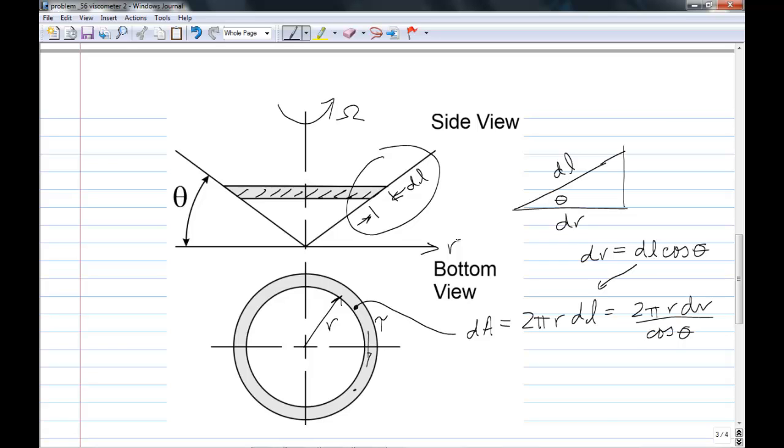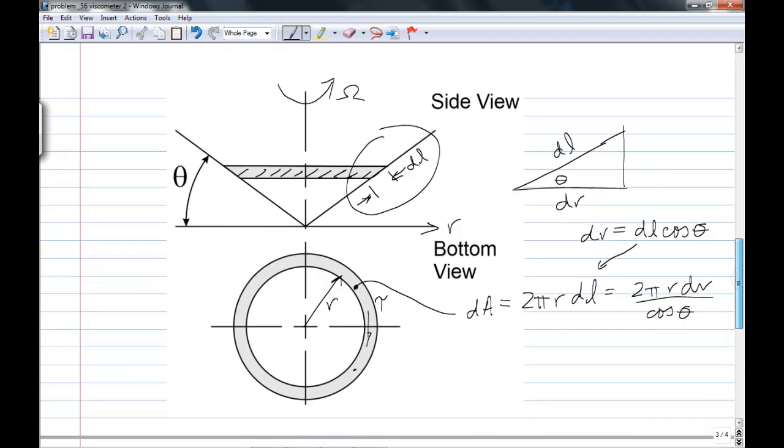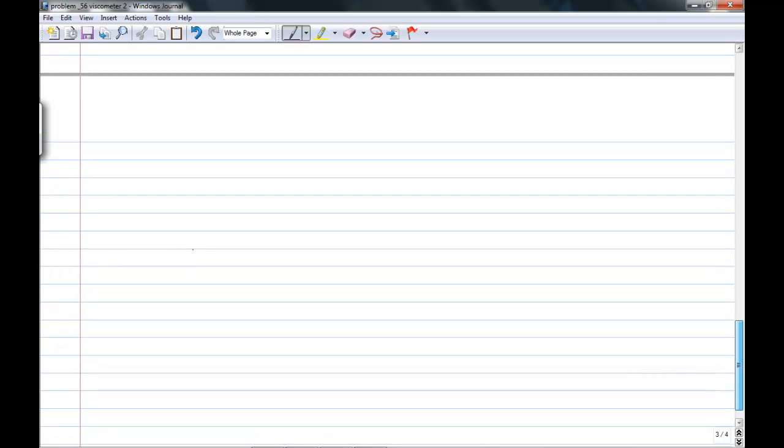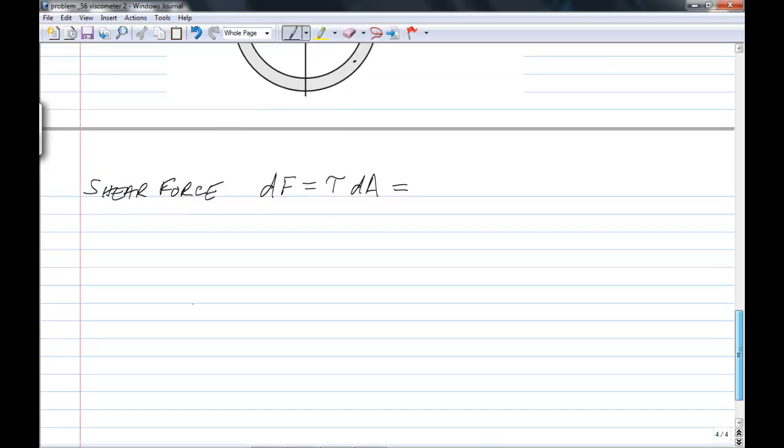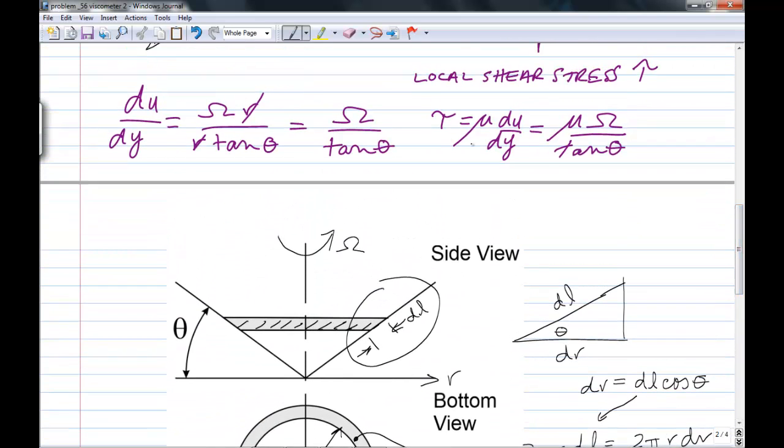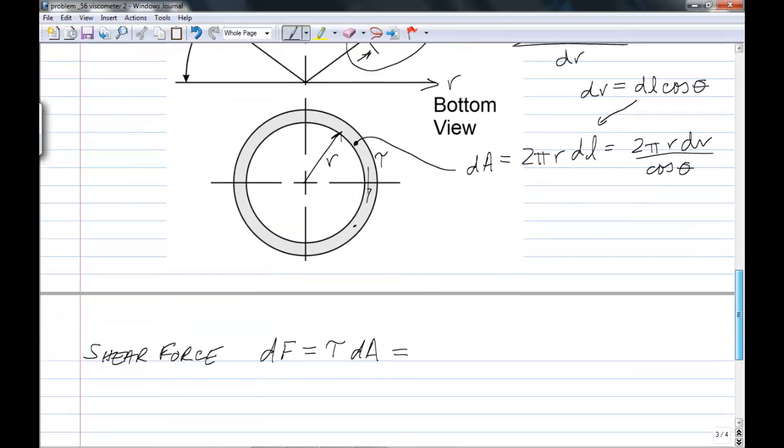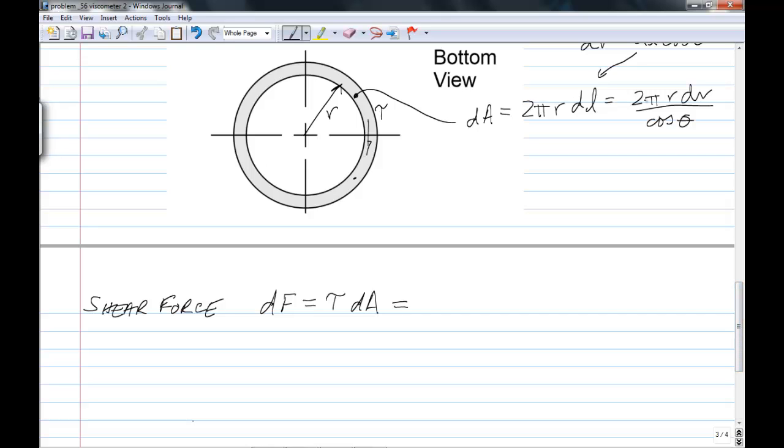Now we have the area and we have the shear stress on that little incremental area. We can multiply them together. Shear stress times area gives you your shear force. Let me move down. So the shear force dF equals tau dA. And if we scroll back, we can see that for tau, we have mu omega over tan theta.